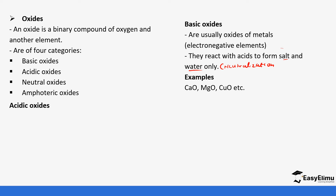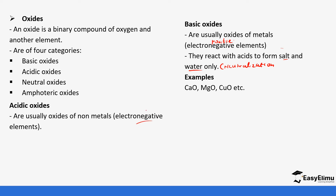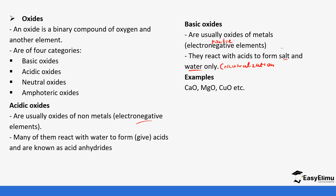We also have acidic oxides. These are the ones formed from non-metals — the non-metals are electronegative. Many of them react with water to form acids and are known as acid anhydrides. For example, carbon dioxide (CO₂), if it dissolves in water, it forms carbonic acid. Sulfur dioxide (SO₂) forms sulfurous acid.